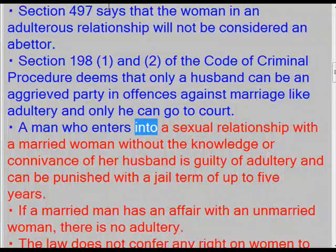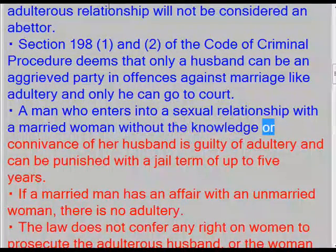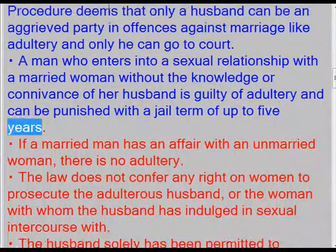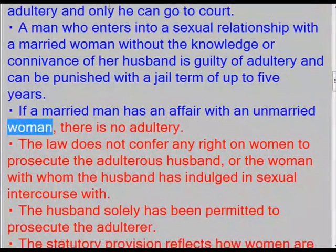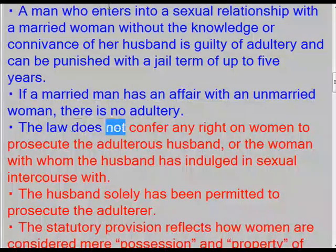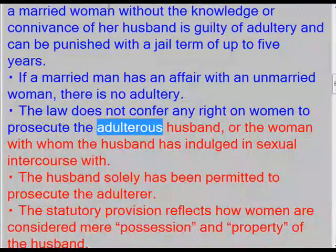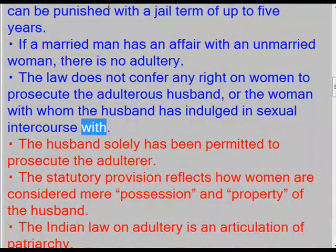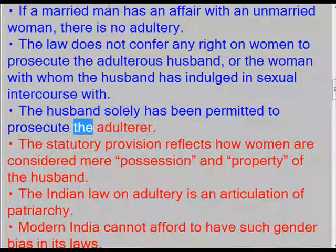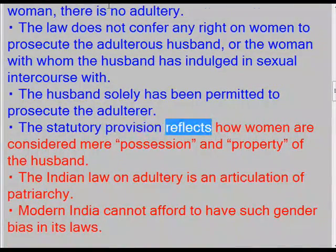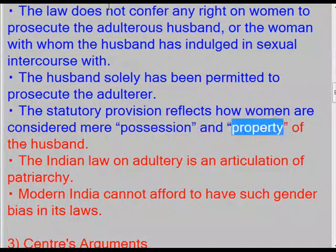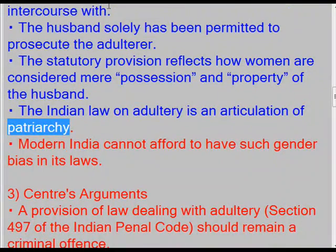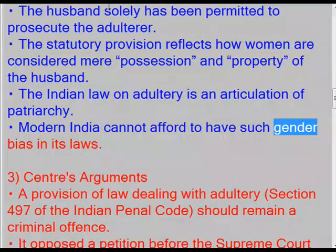Under Section 498, a man who enters into a sexual relationship with a married woman without the knowledge or connivance of her husband is guilty of adultery and can be punished with a jail term of up to five years. However, if a married man has an affair with an unmarried woman, there is no adultery. The law does not confer any right on women to prosecute the adulterous husband or the woman with whom the husband has indulged in sexual intercourse. The husband solely has been permitted to prosecute the adulterer. This statutory provision reflects how women are considered mere possessions and property of the husband. The Indian law on adultery is an articulation of patriarchy, and modern India cannot afford to have such gender bias in its laws.